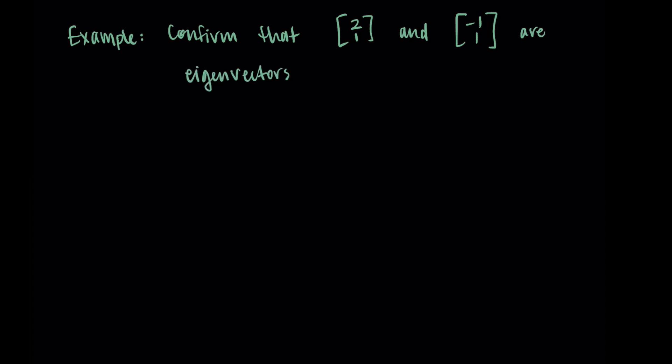To wrap up this video, I'm going to give us an example that uses some of this language. Let's confirm that the vectors [2, 1] and [-1, 1] are eigenvectors of the matrix A, where A equals [4, 2; 1, 3]. Then let's find the corresponding eigenvalues for each of these eigenvectors.